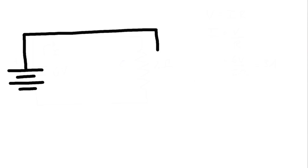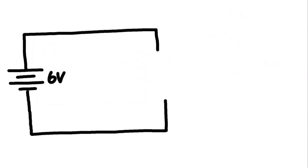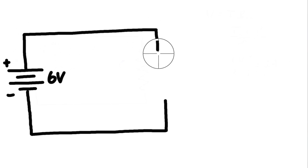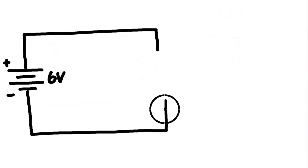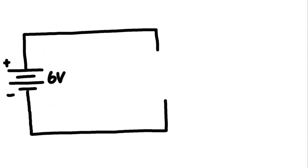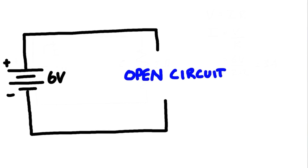Let's start by drawing a voltage source with some wires. This is a 6-volt voltage source with a positive and negative terminal. A wire connects from the positive terminal, comes over, and then there's a gap before the other wire connects back to the negative terminal. Where these wires don't form an actual connection, we call this an open circuit.